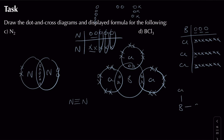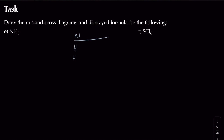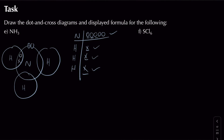The displayed formula for BCl₃ shows three single bonds from boron to each chlorine. For ammonia (NH₃), nitrogen is in group 5 with 5 electrons and each hydrogen has 1 electron. Forming three shared pairs gives nitrogen 8 electrons in its outer shell and 2 electrons in each hydrogen's outer shell. The dot and cross diagram includes a lone pair on nitrogen, and the displayed formula shows nitrogen bonded to three hydrogens — lone pairs are not shown in the displayed formula.